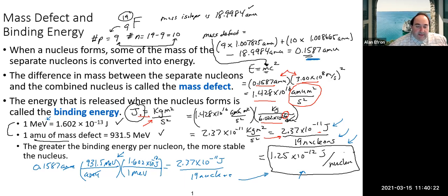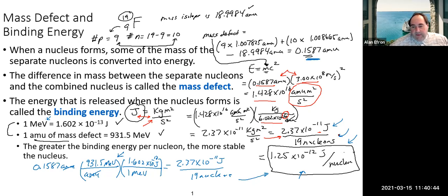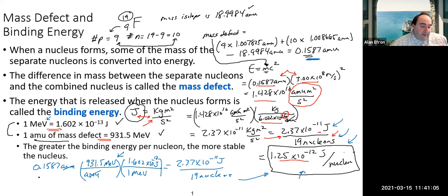One common way to express binding energy is as binding energy per nucleon, where a nucleon is the number of protons and neutrons — essentially the mass number. Alternatively, there are conversions based on Einstein's equation: you can start with the mass defect in amu and use the conversion 1 amu = 931.5 MeV, then convert mega electron volts to joules to get the same result.